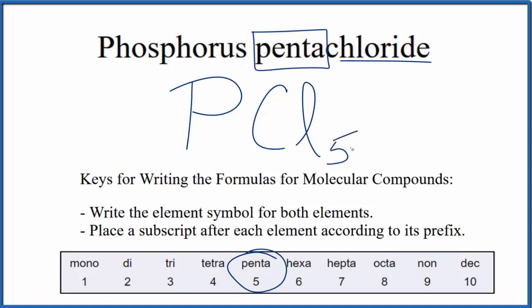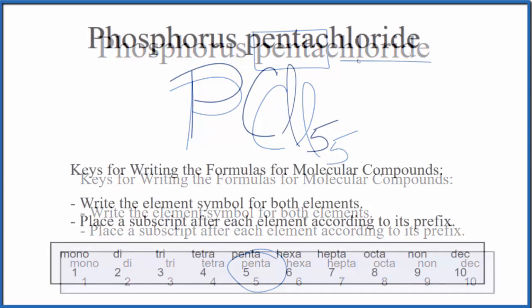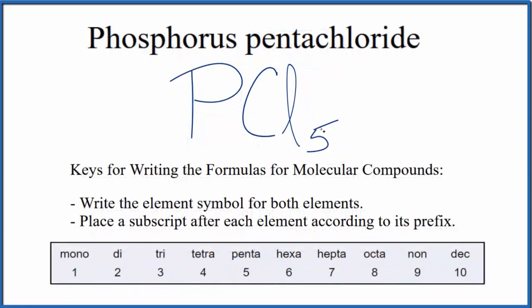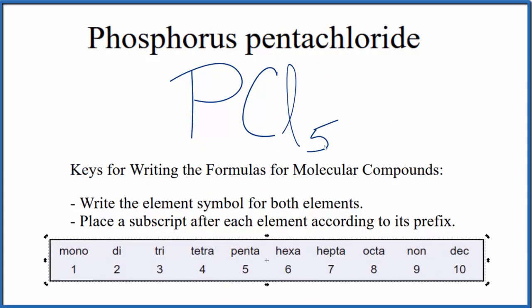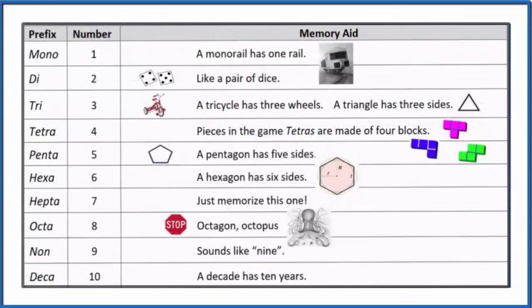So this is the formula for phosphorus pentachloride: PCl5. If you need help memorizing these prefixes, like the five in phosphorus pentachloride, this table might be useful.